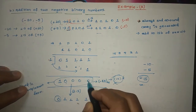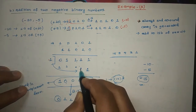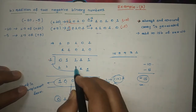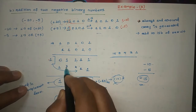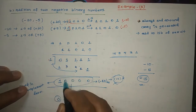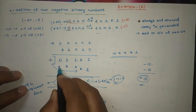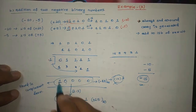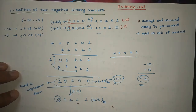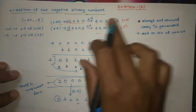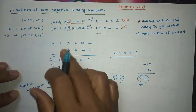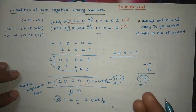Adding the carry to the LSB: 1 plus 1 gives 0 with carry 1, and this propagates through each bit position. After adjusting the result this way, we know that when you represent negative numbers, the adjusted result is negative.